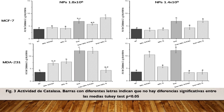En cuanto a la actividad de catalasa, la exposición a las nanopartículas de quitosán con glutatión solo modificó la actividad en las células MDA231, mientras que en las células MCF7 no hubo diferencias respecto a las células no tratadas. Sin embargo, cuando las células se exponen a doxorrubicina combinada con nanopartículas de quitosán con glutatión, la actividad se ve disminuida. El GSH proveniente de las nanopartículas pudiera estar modificando los niveles de especies reactivas de oxígeno, mientras que las nanopartículas de quitosán incrementaron la actividad, posiblemente porque los grupos amino del quitosán facilitan la unión covalente a la enzima catalasa.